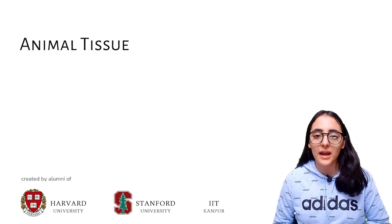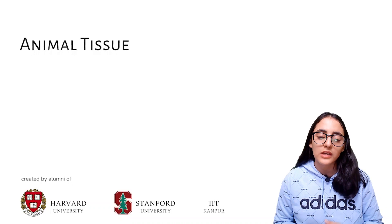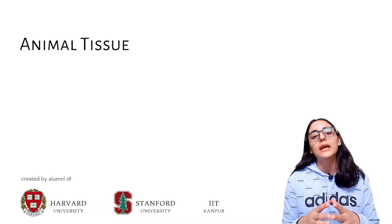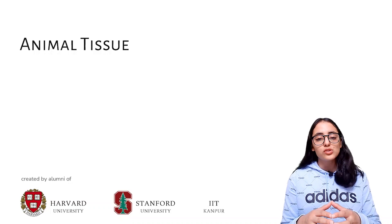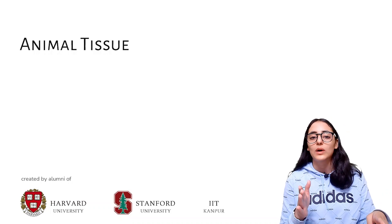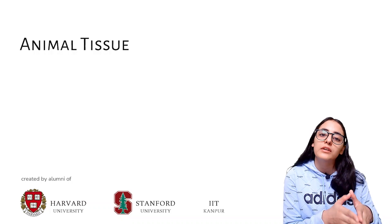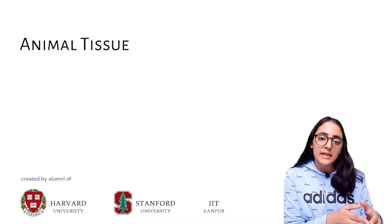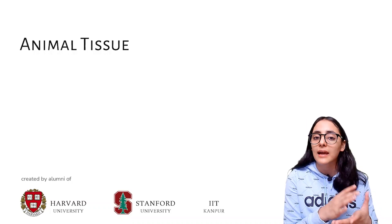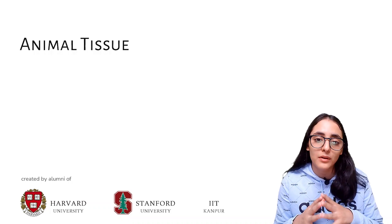Hi guys, this is Tanvi, your biology educator and welcome to our channel Study Room. Today we are doing the chapter of tissues, which is chapter 6 of your NCRT textbook. The chapter is divided into two parts: plant tissues and animal tissues. I have already covered plant tissues in the previous two videos, so check those out. Today we will be starting with animal tissues.